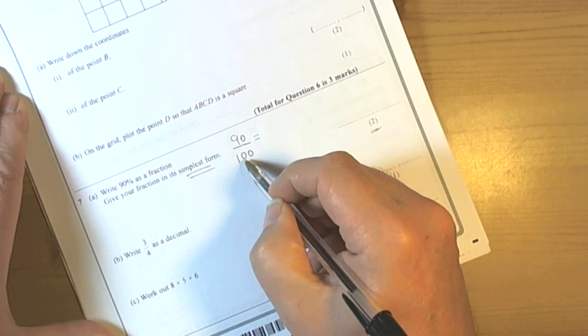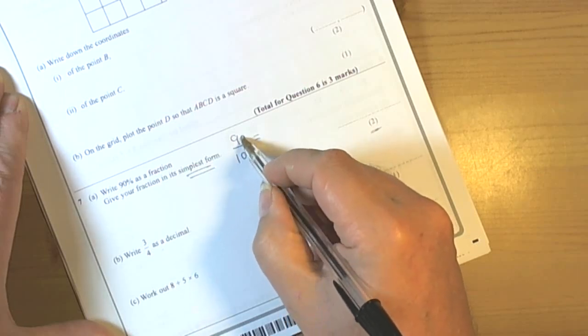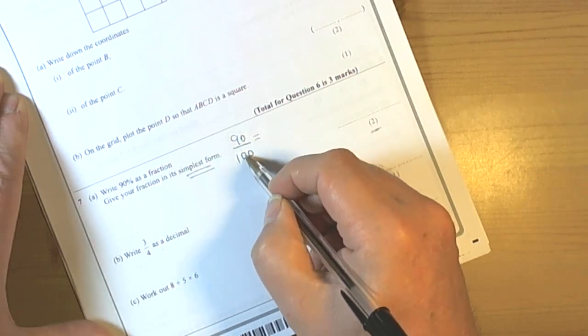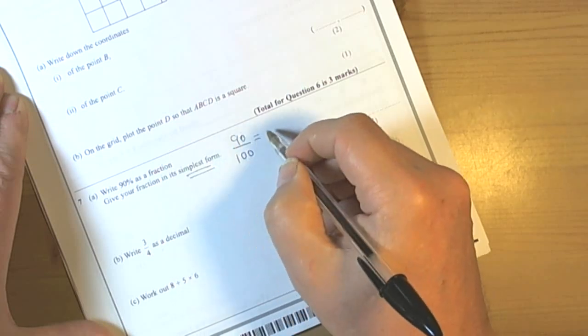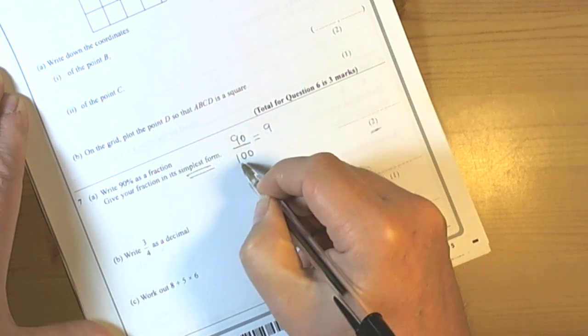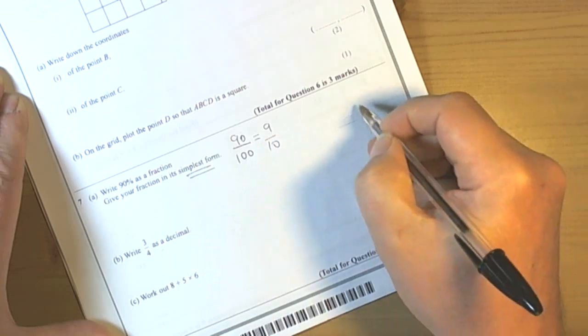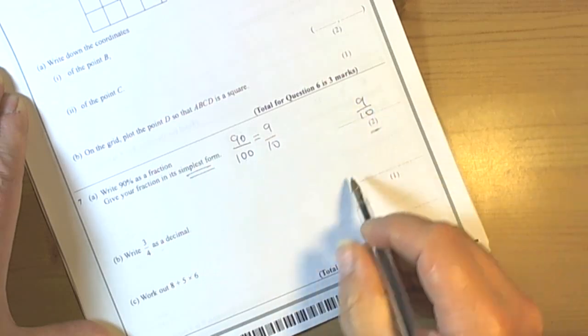Simplest form for fractions, look for a common factor. Both of these numbers will divide by 10, so the numerator and the denominator divide by 10. So 90 divided by 10 is 9 and 100 divided by 10 is 10, so our final answer here will be 9 tenths.